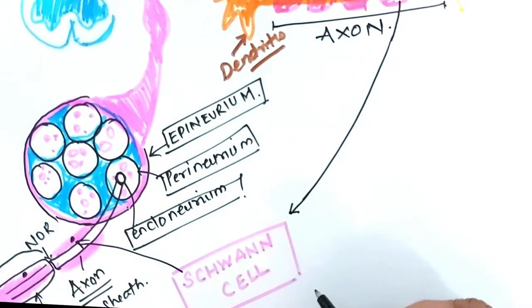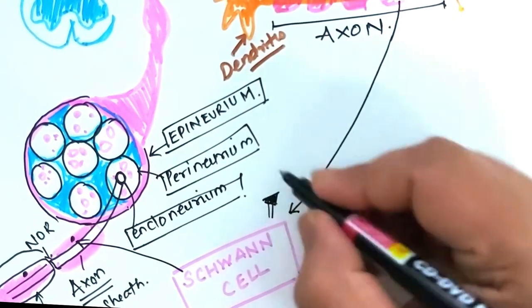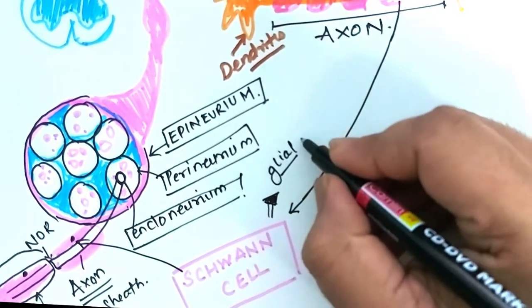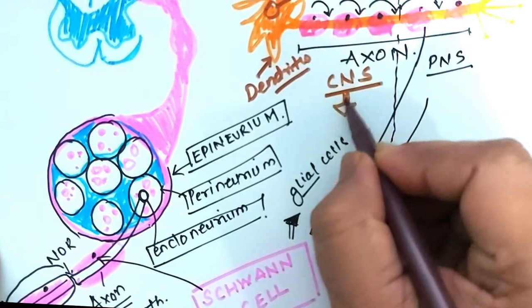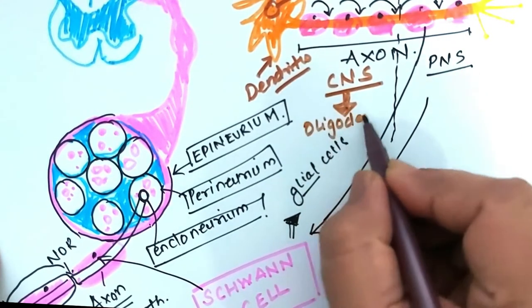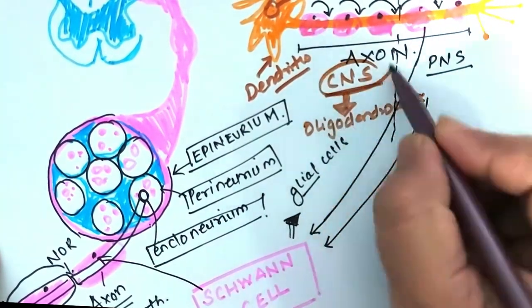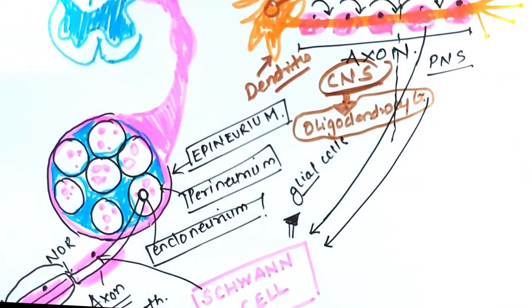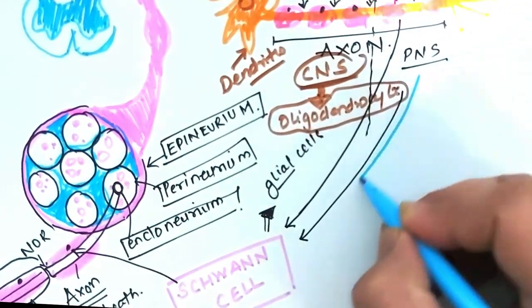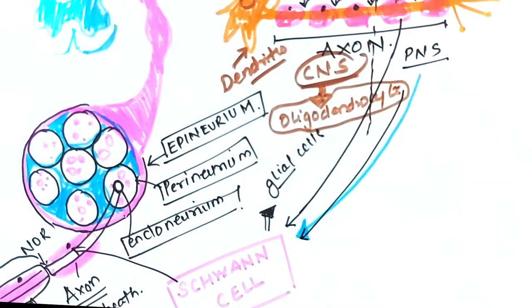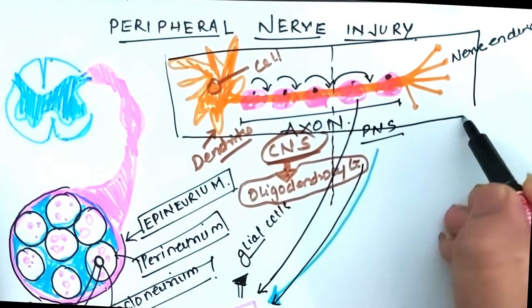Now, myelinated axons in the central nervous system, that is in the brain and spinal cord, are made up of glial cells called oligodendrocytes, whereas myelinated axons in the peripheral nervous system are made up of Schwann cells.